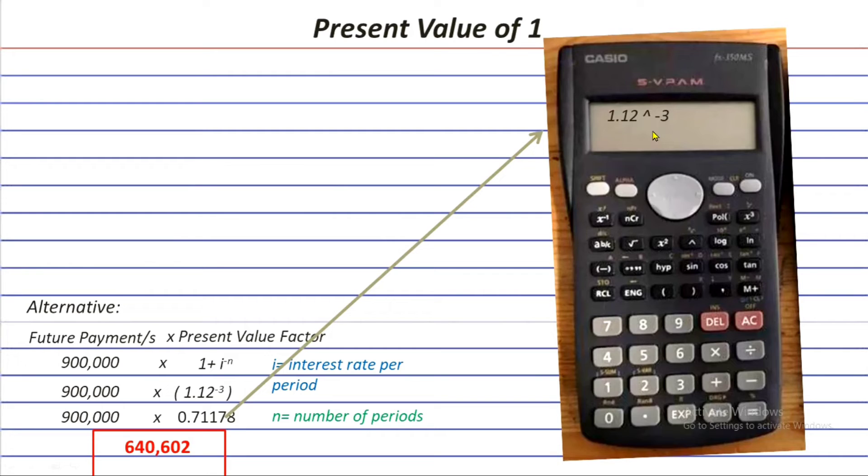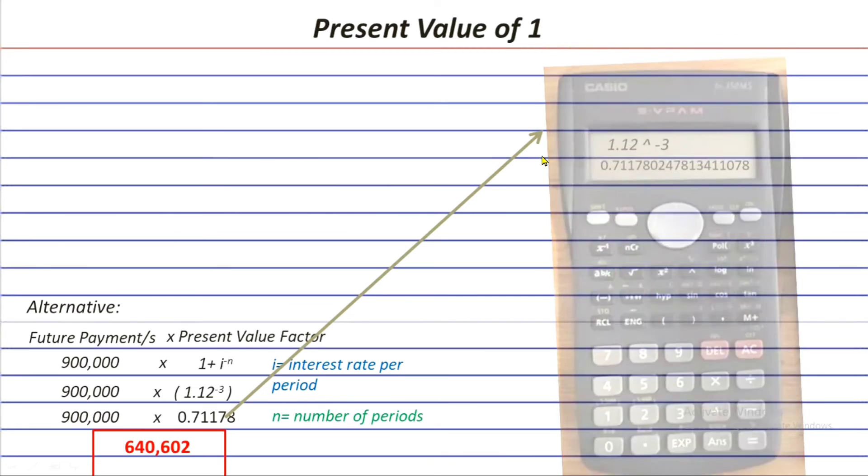And after you have typed all of that, press the equals button and you will get this. Actually, this is the present value of 1 factor if you are not going to round it off to the nearest 5 decimal places. That's it for scientific calculator.